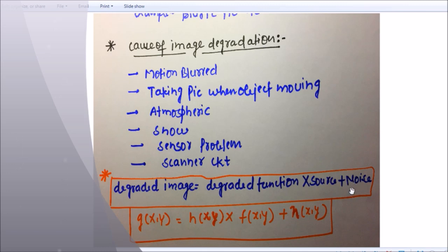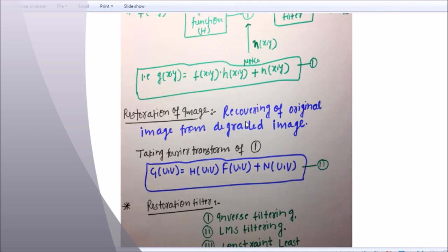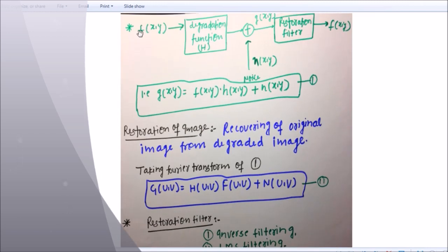Let me explain with the block diagram, then you'll understand. See here guys, this is f(x,y), this is our original image. Here degradation function is given, this is h(x,y), and here noise is there, n(x,y). After noise, the original image will become g(x,y), this is degraded image.